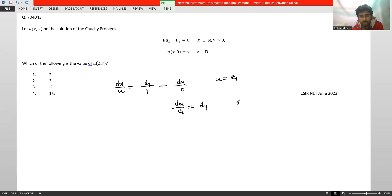On integrating, we get x - c1*y = c2, where c2 is another arbitrary constant. Putting the value of c1, we get x - u*y = c2.